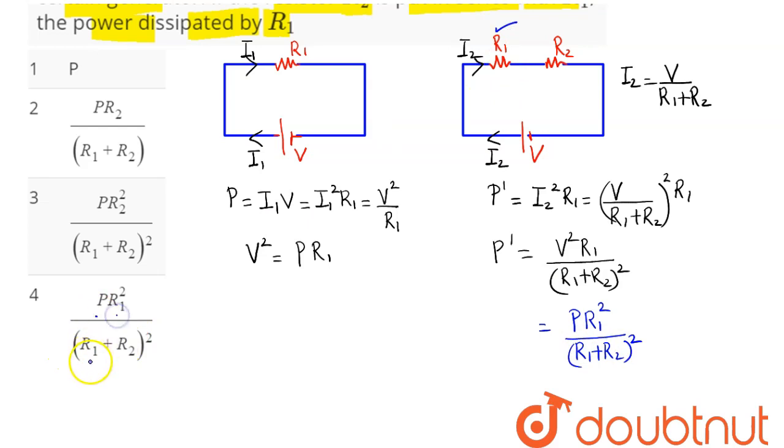So this is the power dissipated across the resistor R1: P times R1 squared by R1 plus R2 whole squared, which is option number 4. Hence 4 is the correct answer.